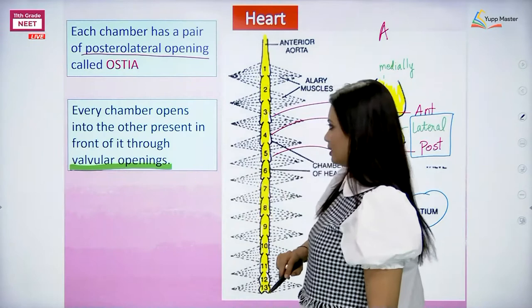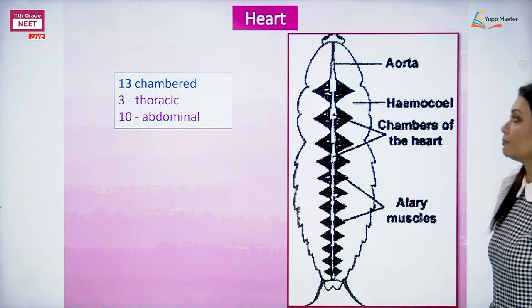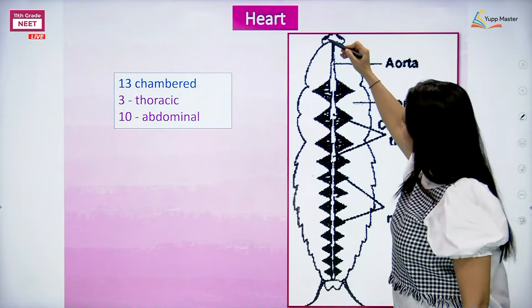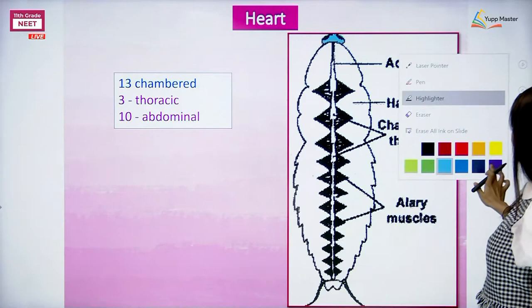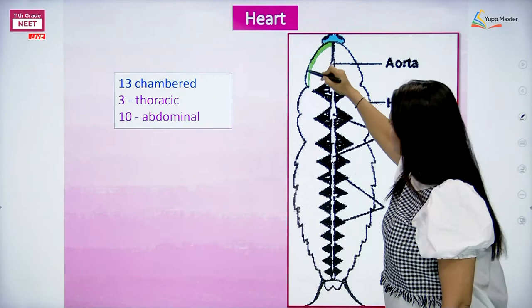The heart is 13-chambered. In these 13 chambers, let's identify the body parts. This here is the head of the cockroach. Next, when we want to talk about the thorax region, this here is the first segment of the thorax, which was called the prothoracic part.